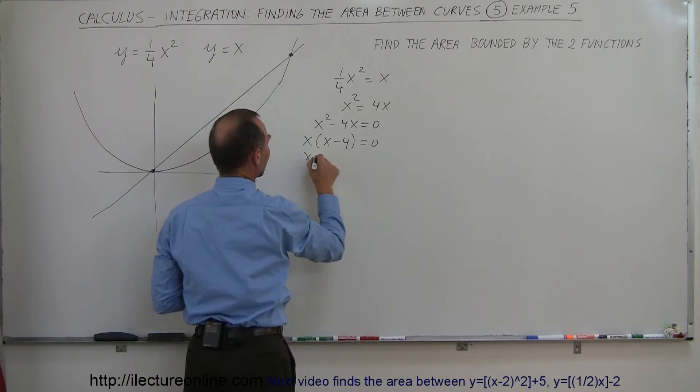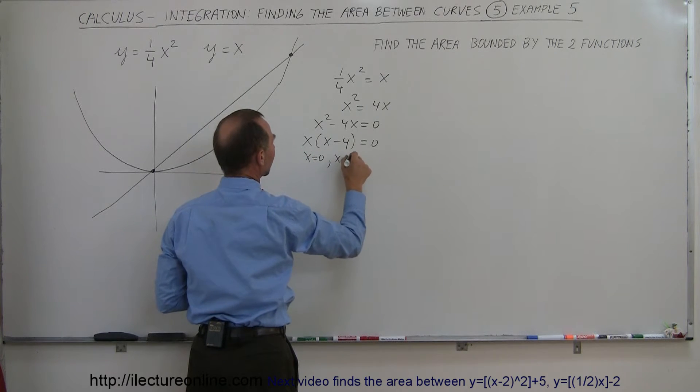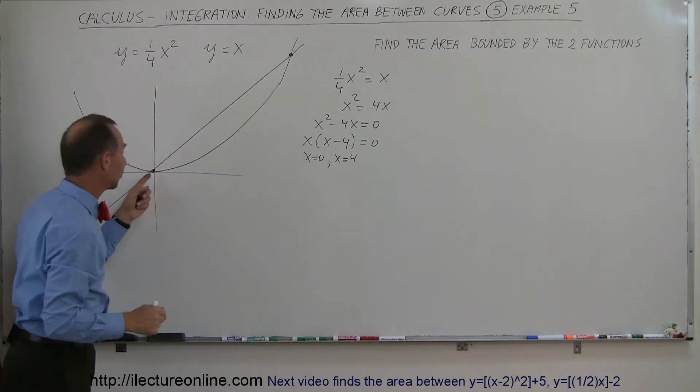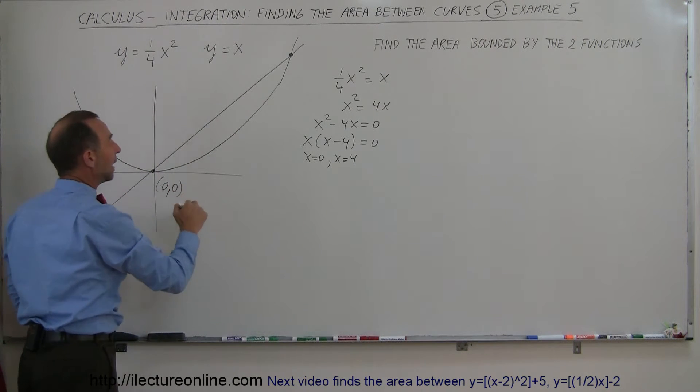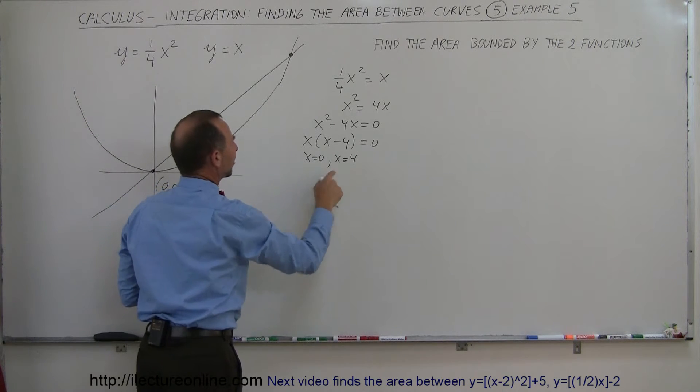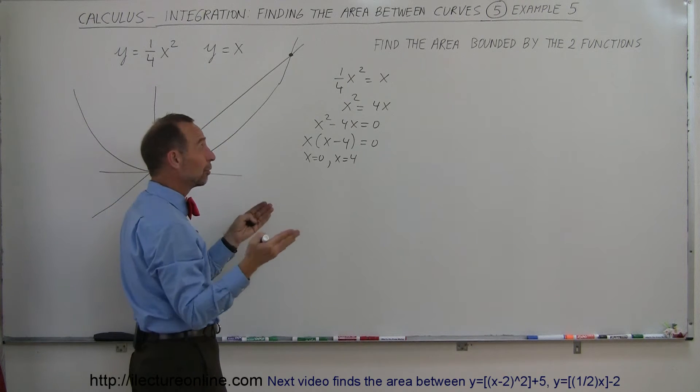Which means x equals 0 is a root, and x equals 4 is a root. Now x equals 0 we already found, it's right here. And then x equals 4, I shouldn't really call them a root, that's where the two equations cross.